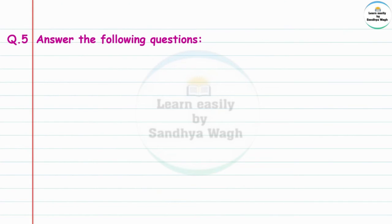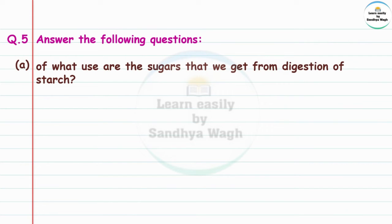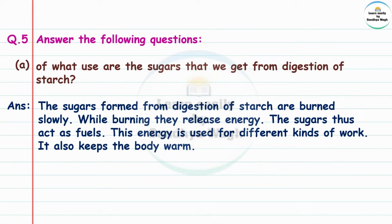Question 5a: Of what use are the sugars that we get from digestion of starch? Answer: The sugars formed from digestion of starch are burned slowly. While burning, they release energy, and the sugars act as fuels in the body. This energy is used for different kinds of work. It also keeps the body warm.